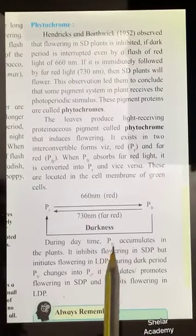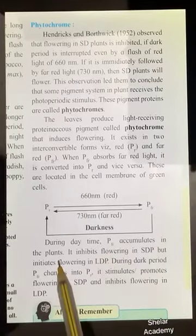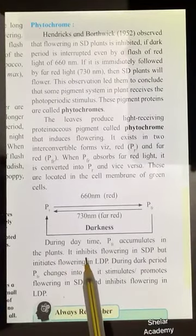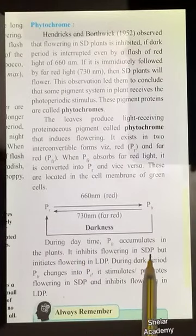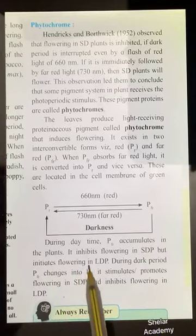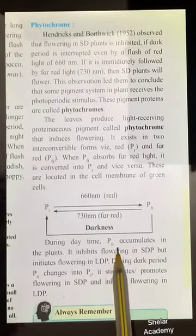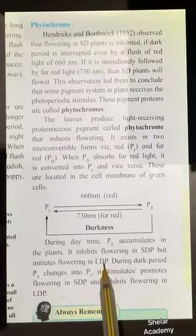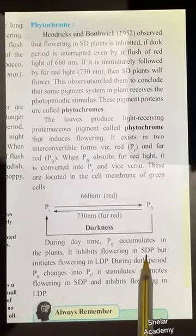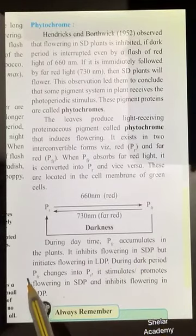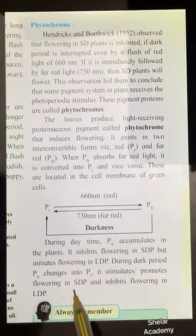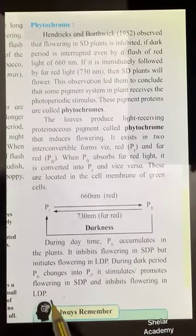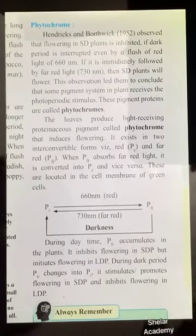During daytime, Pfr accumulates in the plant. It inhibits flowering in short day plants but initiates flowering in long day plants — so Pfr is mainly responsible for flowering in long day plants. During the dark period, Pfr is converted back into Pr, which stimulates and promotes flowering in short day plants, while Pr inhibits flowering in long day plants.